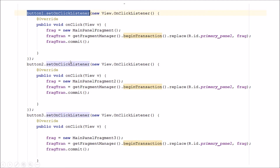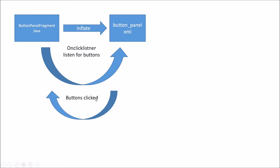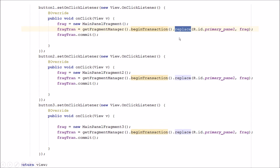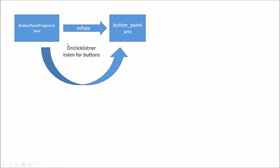Someone comes by, sees the app, and clicks a button. This is going to load one of the main panel fragments — new main panel fragment two or new main panel fragment three — and it's going to replace what's in the primary panel. At the very beginning of the app it will be main panel fragment one, since we added that initially. Each button click replaces whatever is in primary panel with a new instance of the corresponding main panel fragment.